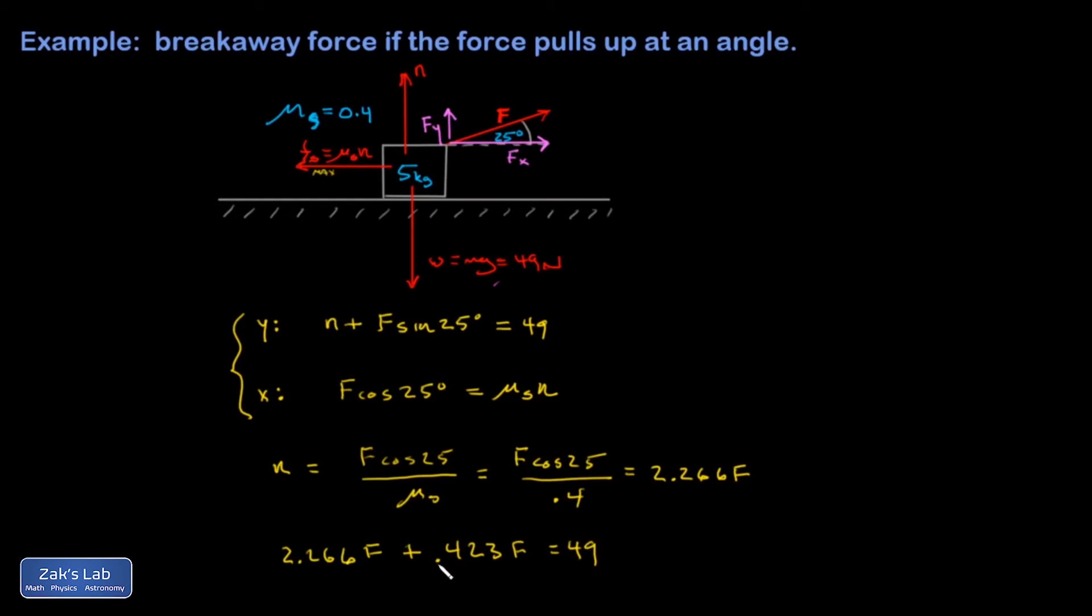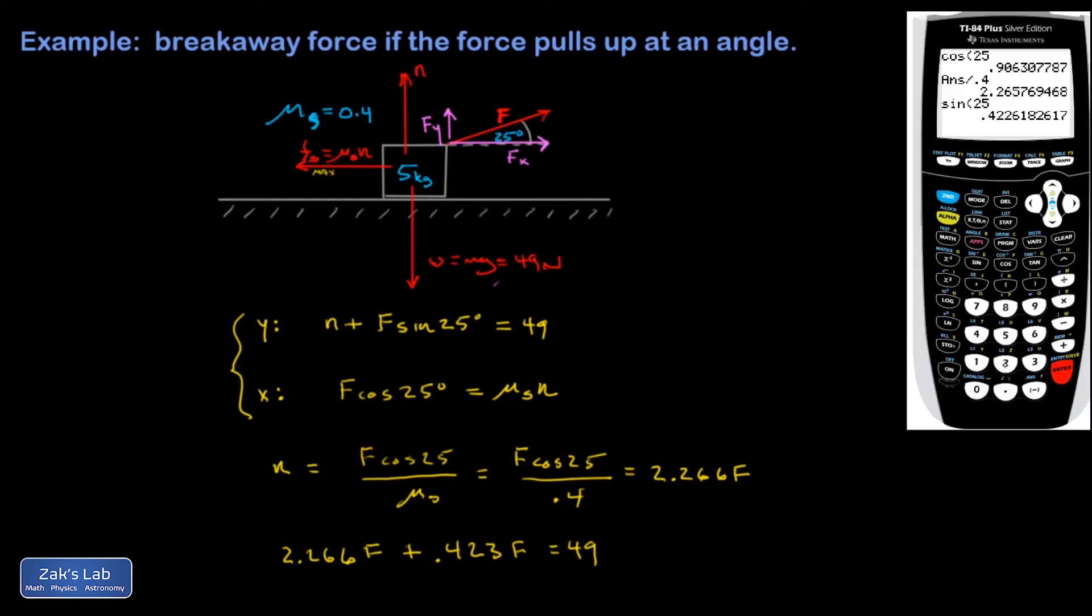So we're going to factor out an F here and then divide by the coefficient of F. I think I'll just do all that at once in the calculator, so I have the two coefficients of F, 2.266 plus an additional 0.423. So on the left side I'll have 2.689 F, and I'm going to do 49 divided by that. I'll try again, 49 divided by my previous answer, and I get 18.22.